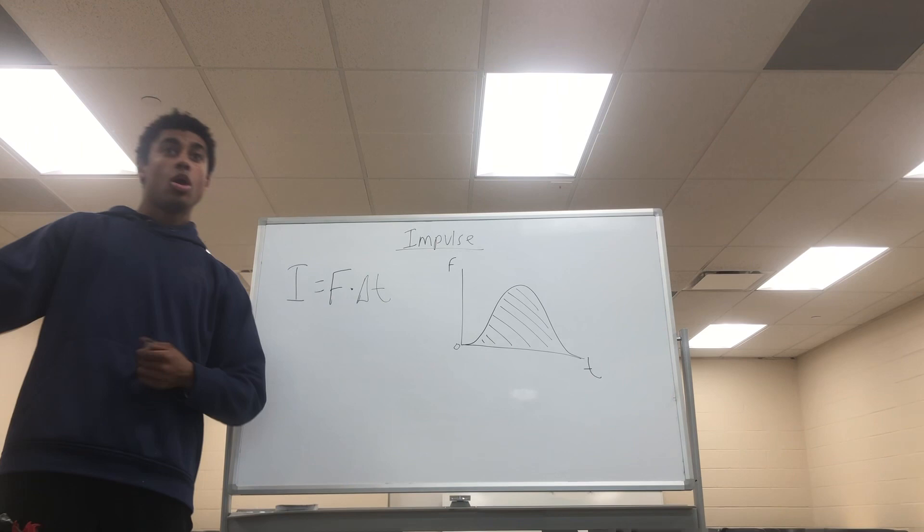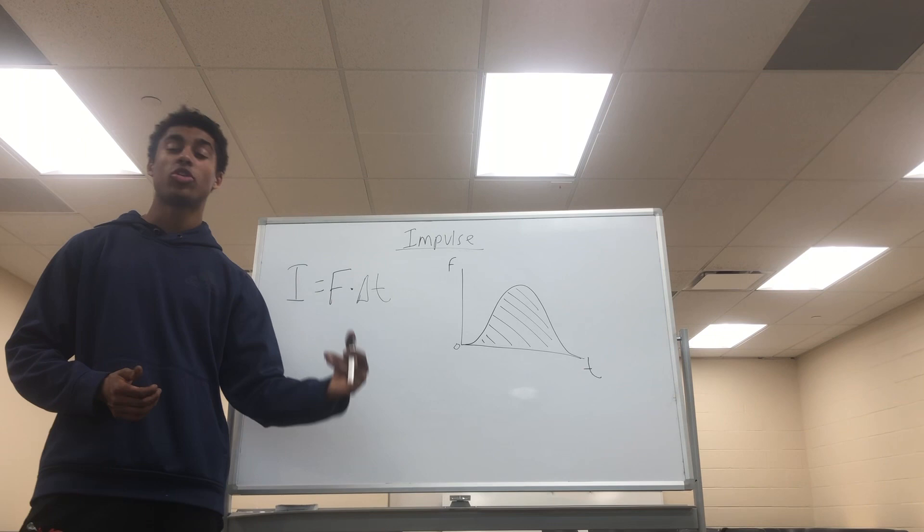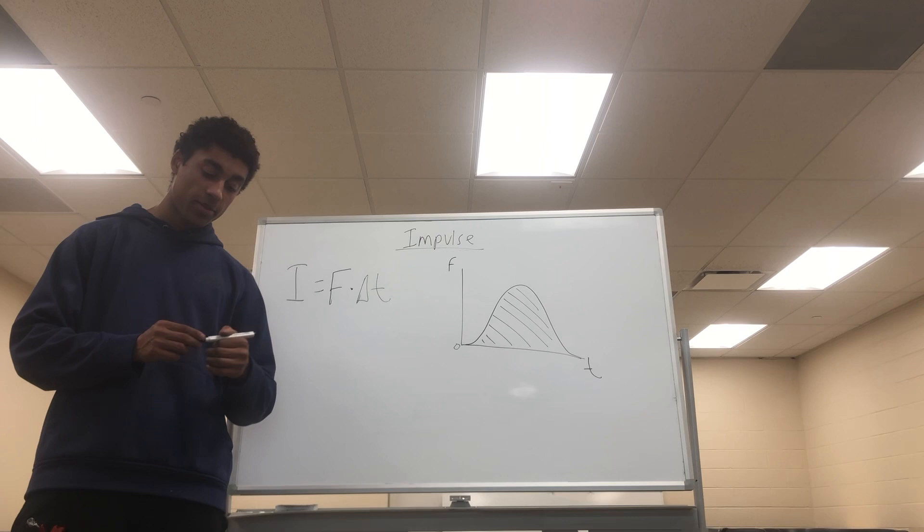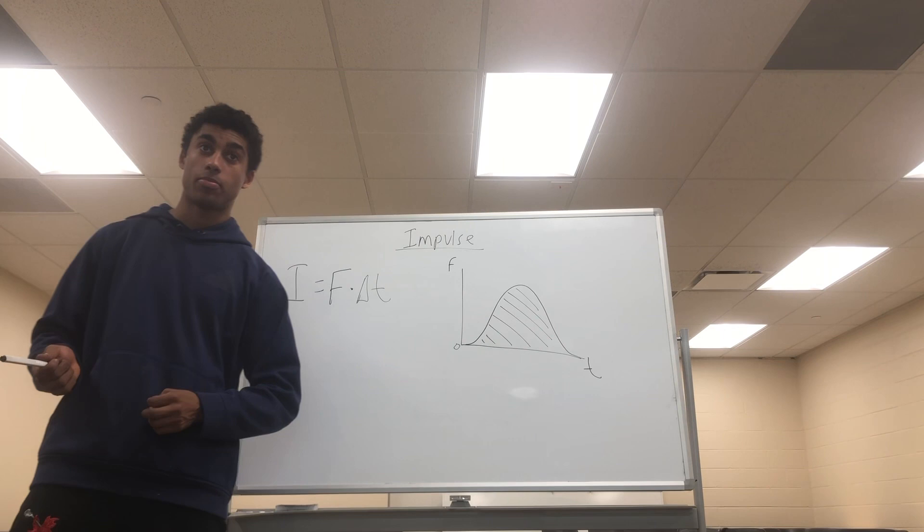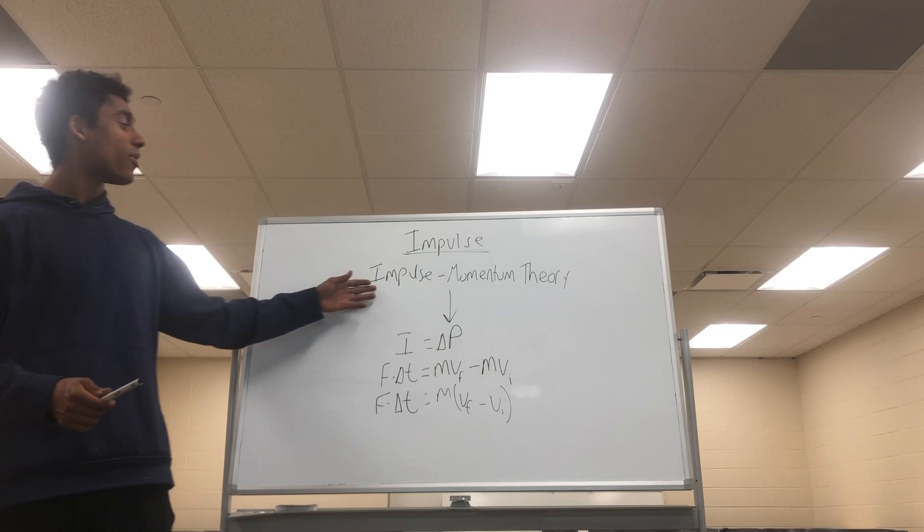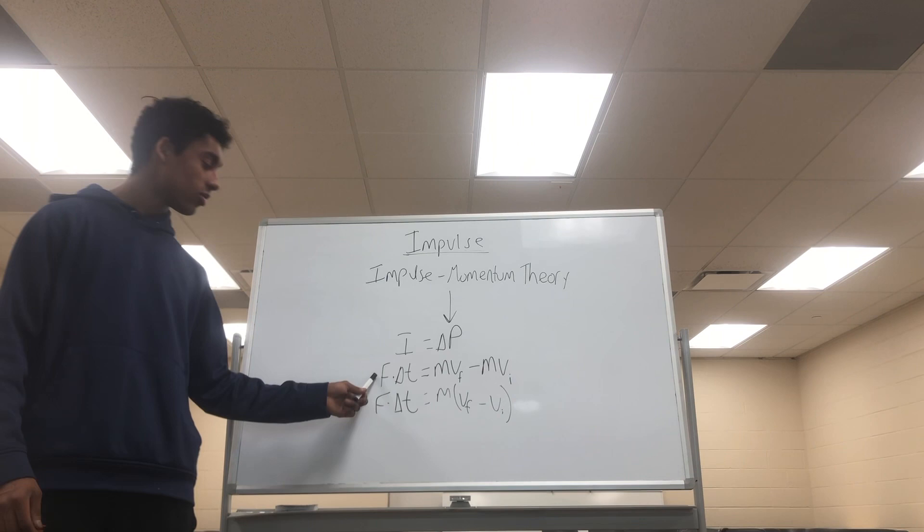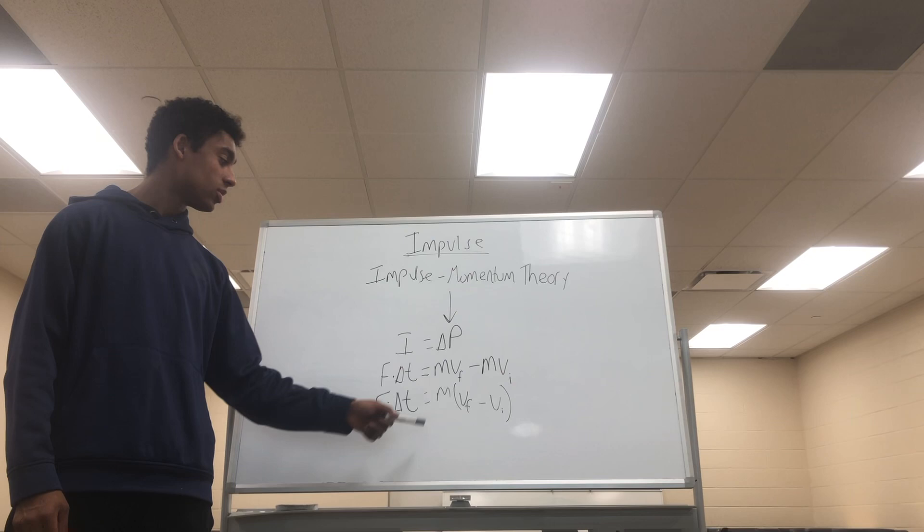When a car hits a wall, it exerts a force on that wall, which in turn exerts a force back onto the car, which will slow it down from a value of velocity to zero. As we've previously stated, when the velocity is changed to zero, so is the momentum. From that, we can develop the impulse momentum theory, which states that the impulse on a car is equal to the change in its momentum, or force times time equals mass times velocity final minus velocity initial.